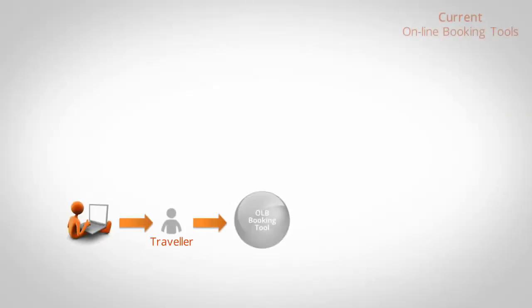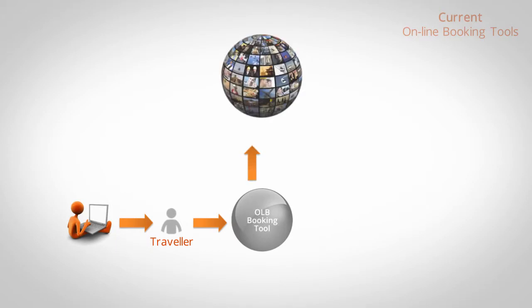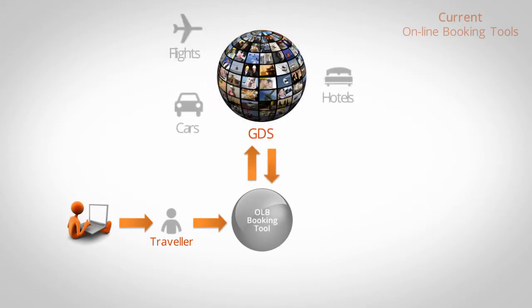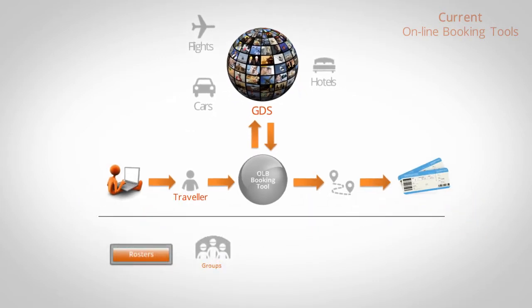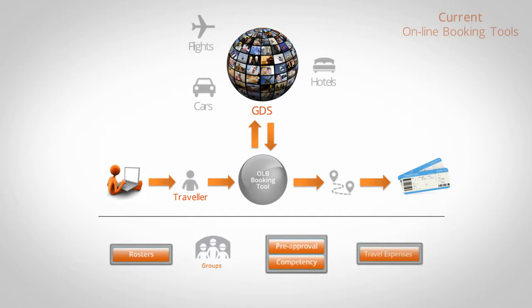Online booking tools check availability and book commercial flights, hotels, and cars. Everything else is done outside of the OBT — group bookings, pre-trip approvals, clearance to travel, and post-trip expense management are all handled in other systems.